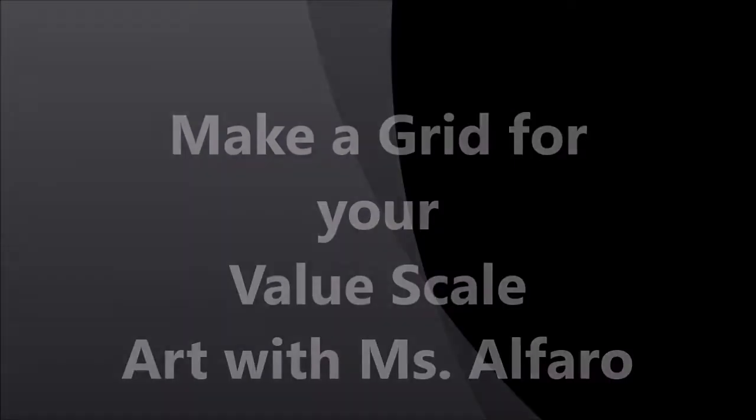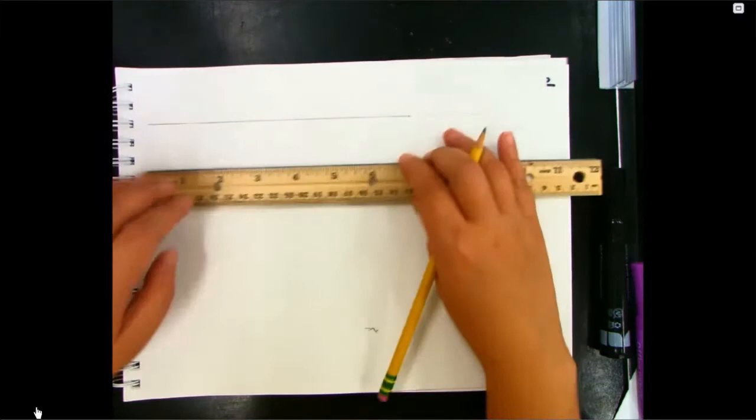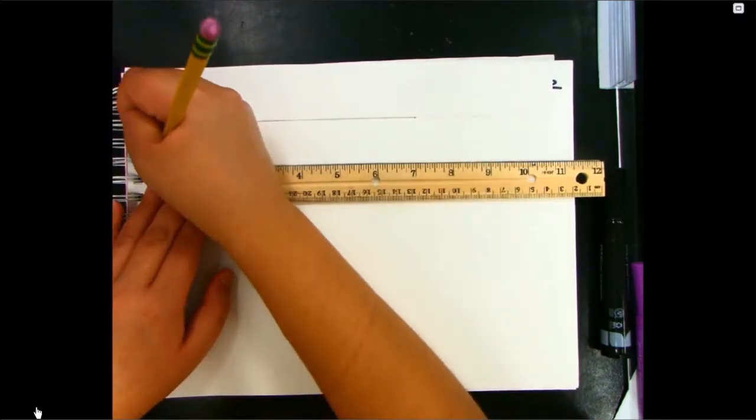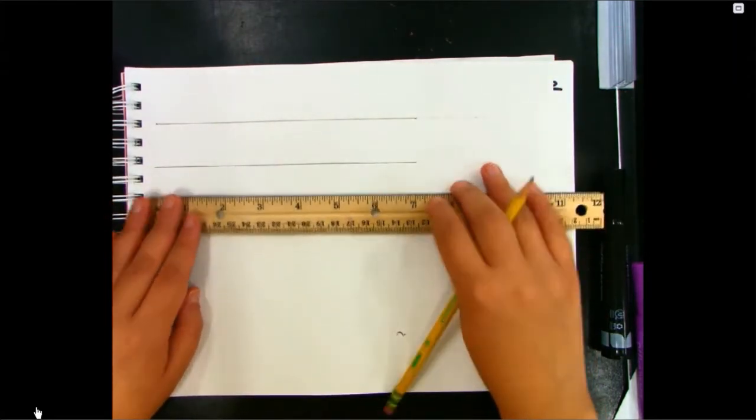For this assignment you will need a ruler, a pencil, and a blank paper. I want you to start by drawing a seven inch long line across your page, and after you do the first line you're going to be drawing four lines that are about equal distance apart.